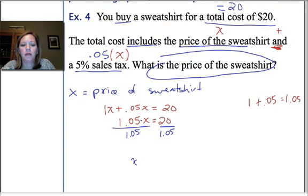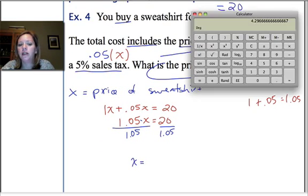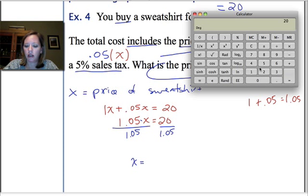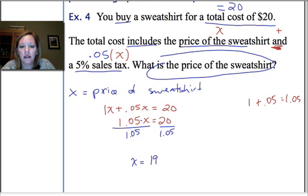All righty. Now, it's time to pull up our little calculator. We're going to do 20 divided by 1.05. And, again, that gives me 19.0476. And, even there, I'm rounding. So, 19.0476.